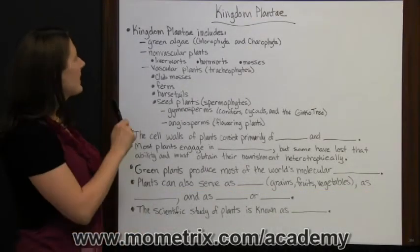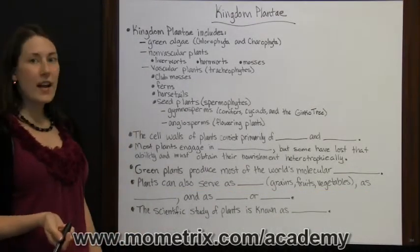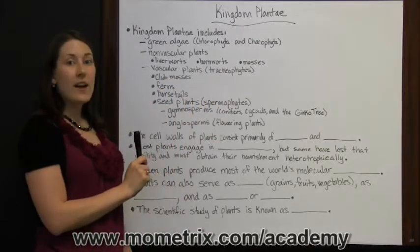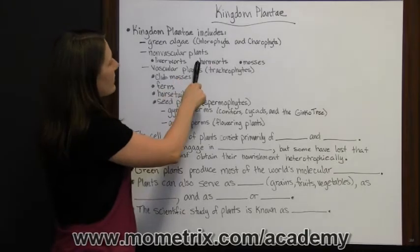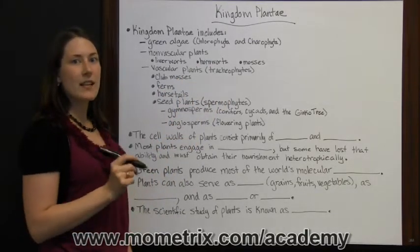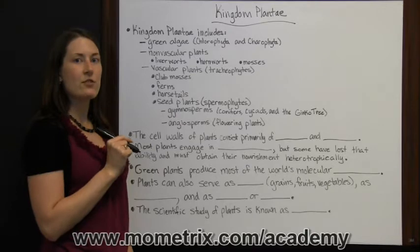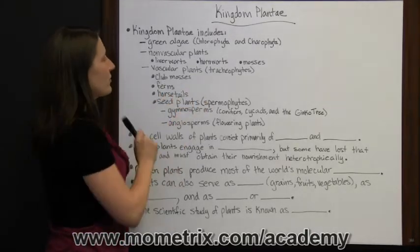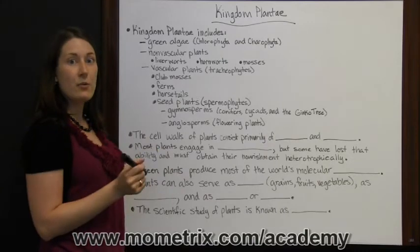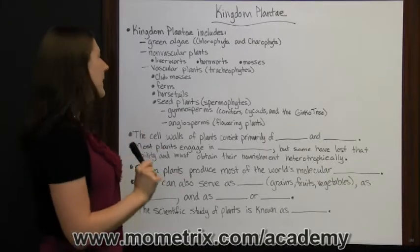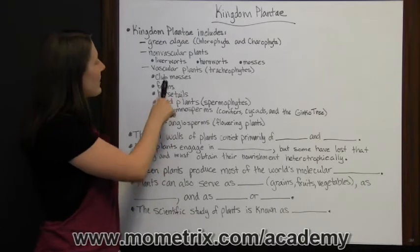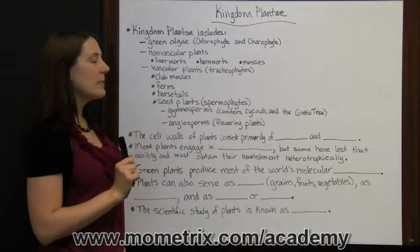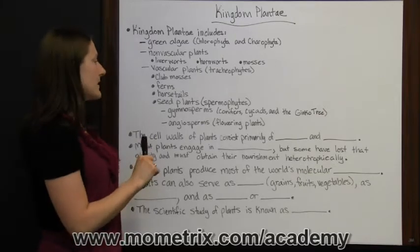Kingdom Plantae includes green algae — chlorophyta and carophyta — non-vascular plants such as liverworts, hornworts, and mosses. Non-vascular means they don't have any kind of veins to carry nutrients throughout the plant. Vascular plants, or tracheophytes, do have veins that carry nutrients and water throughout the plant, and they include club mosses, ferns, horsetails, and seed plants, also known as spermophytes.